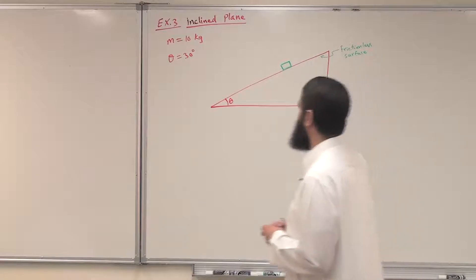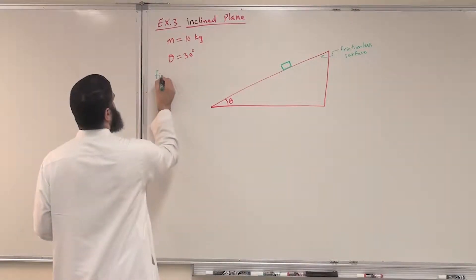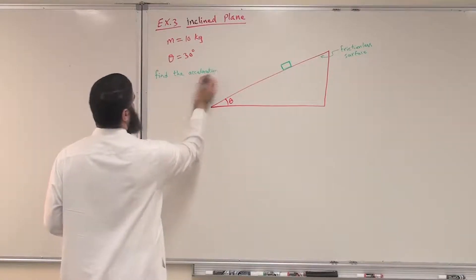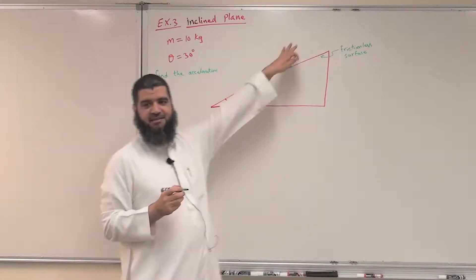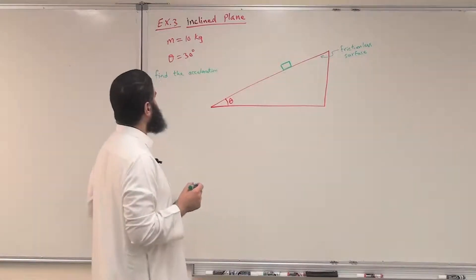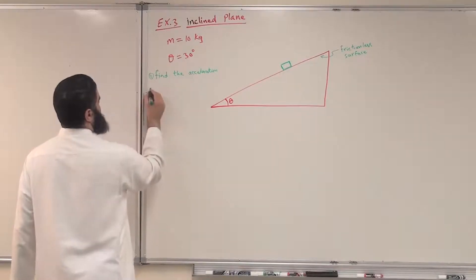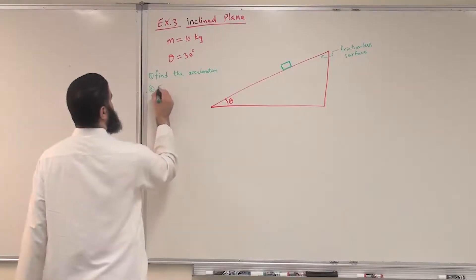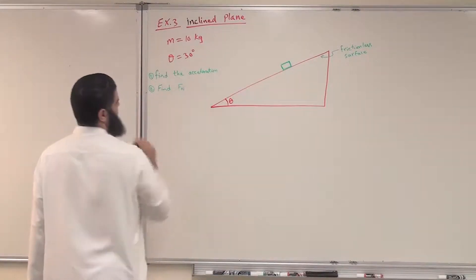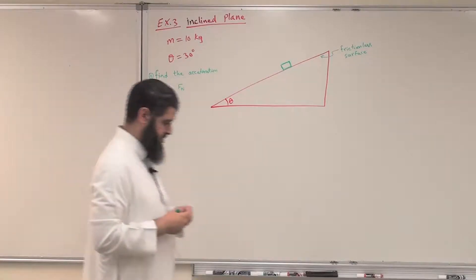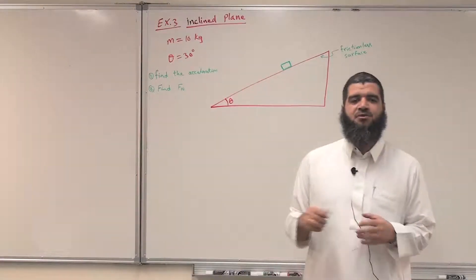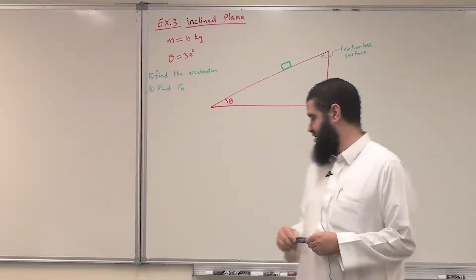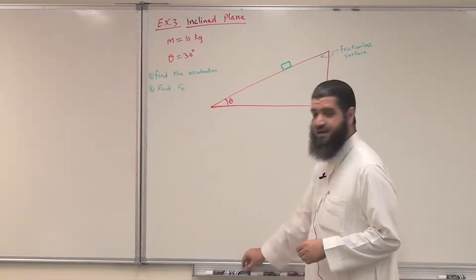The problem asks us to find the acceleration. Our object will be accelerating downward. The second question is to find the normal force of the surface on the object, find Fn. First of all, as we have seen before, we need to draw the free body diagram: what are the forces acting on our object, and what is the direction of the acceleration?